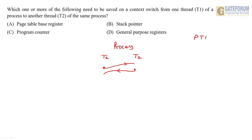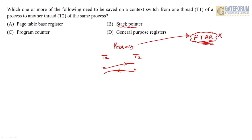Regarding the page table base register: it refers to a particular process. Here we are not switching between processes, we are switching between threads of the same process. So there is no need to save the page table base register address because it is not going to change. Now, regarding the stack pointer — we definitely need to save the status of the stack pointer.